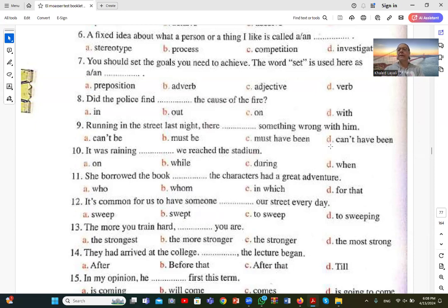Number nine: Running in the street last night, there blank something wrong with him. There must have been something wrong with him. I use must have been to make a strong prediction or strong inference about something that happened in the past. Must be is for the present, must have been is for the past.